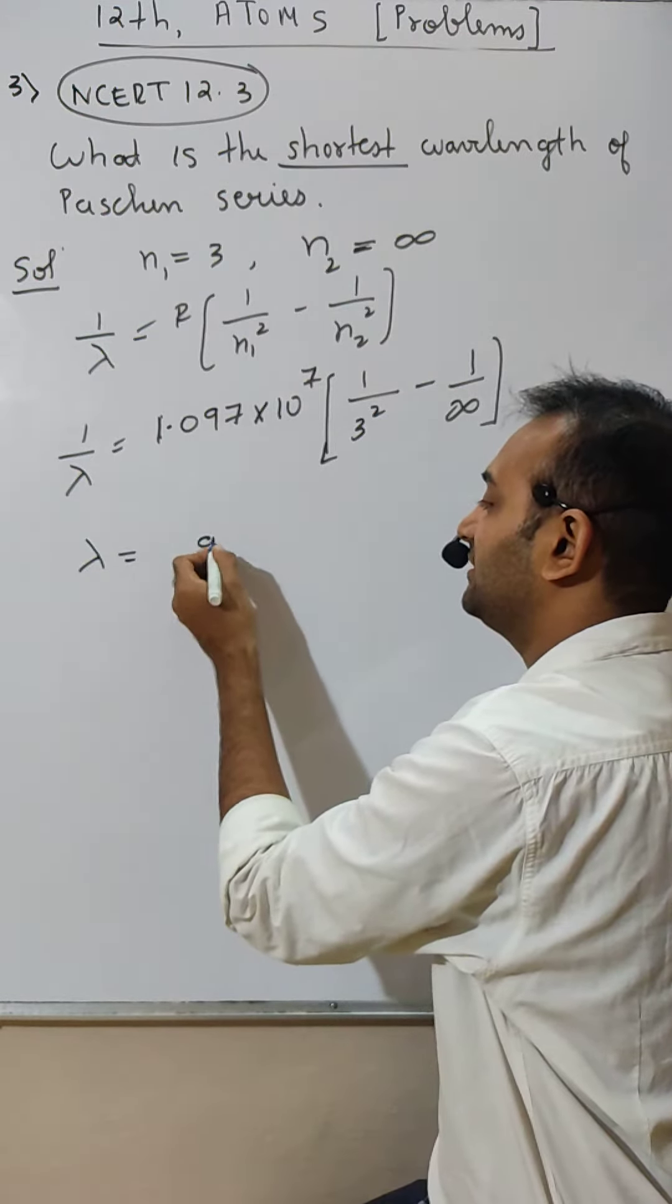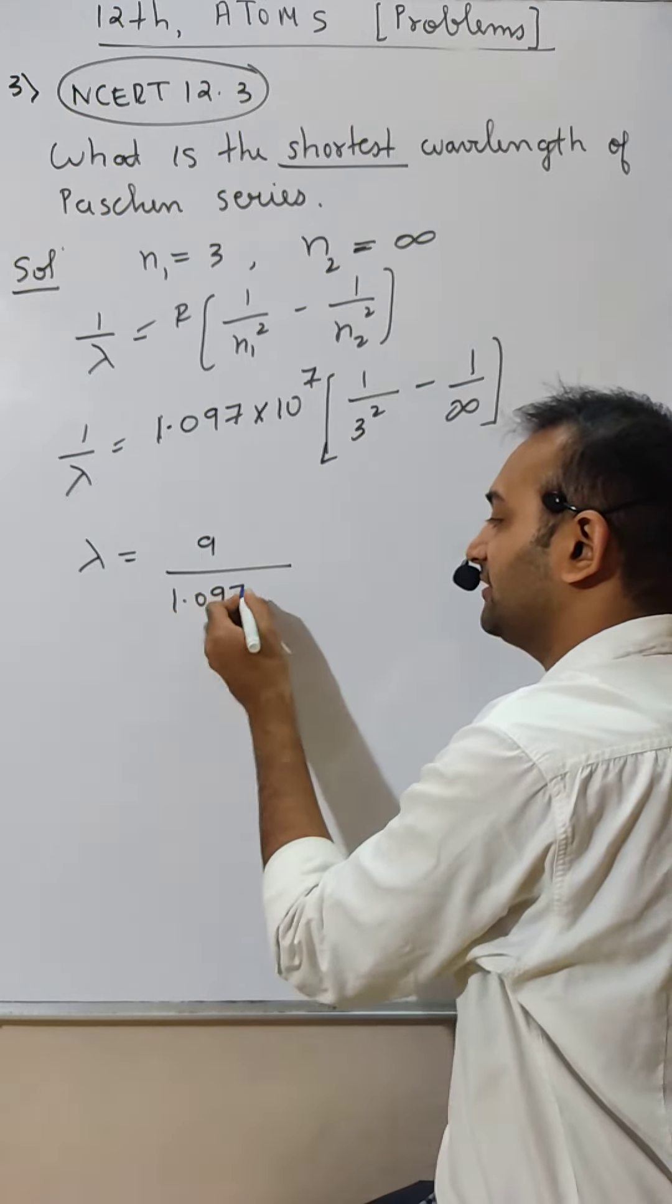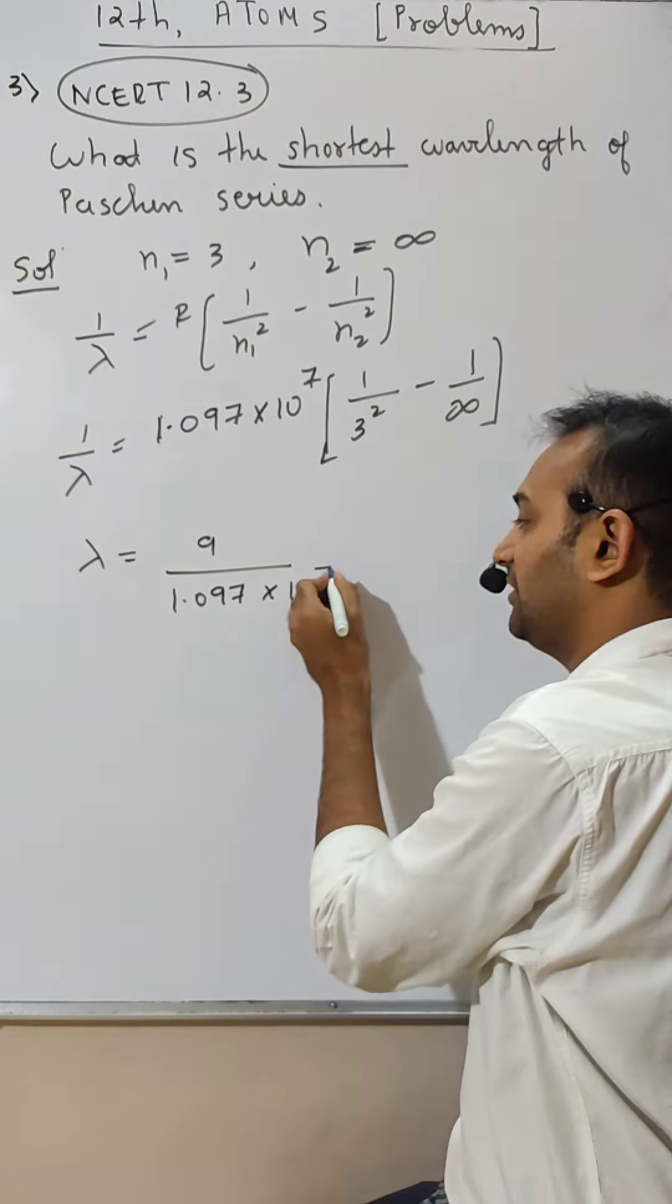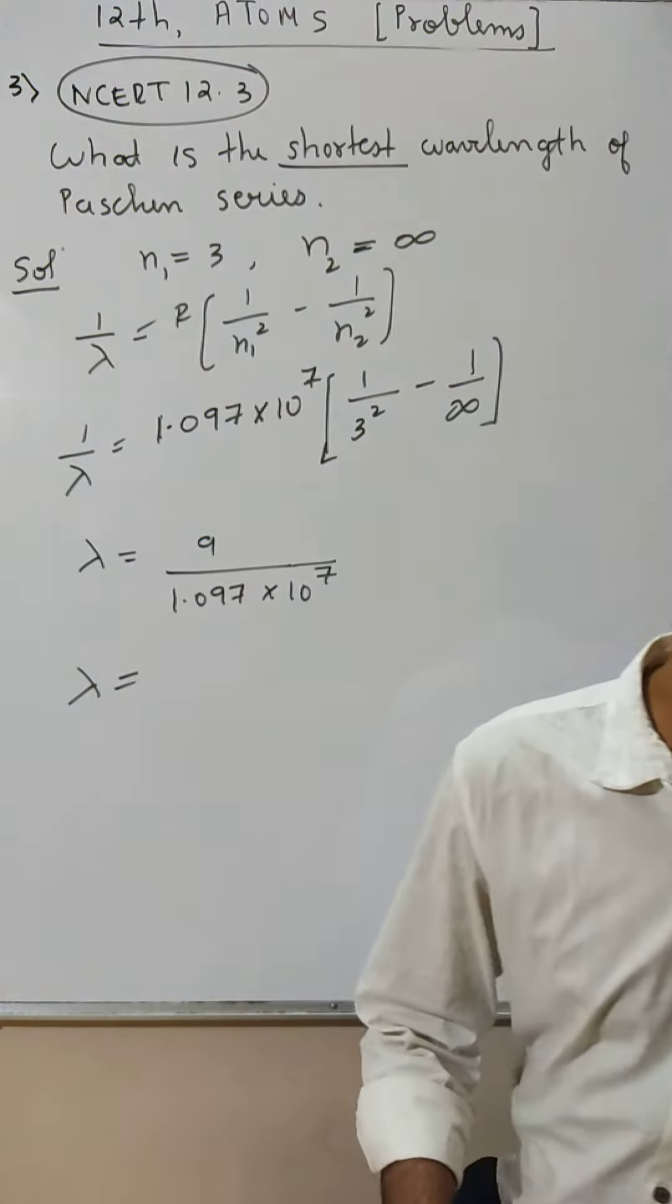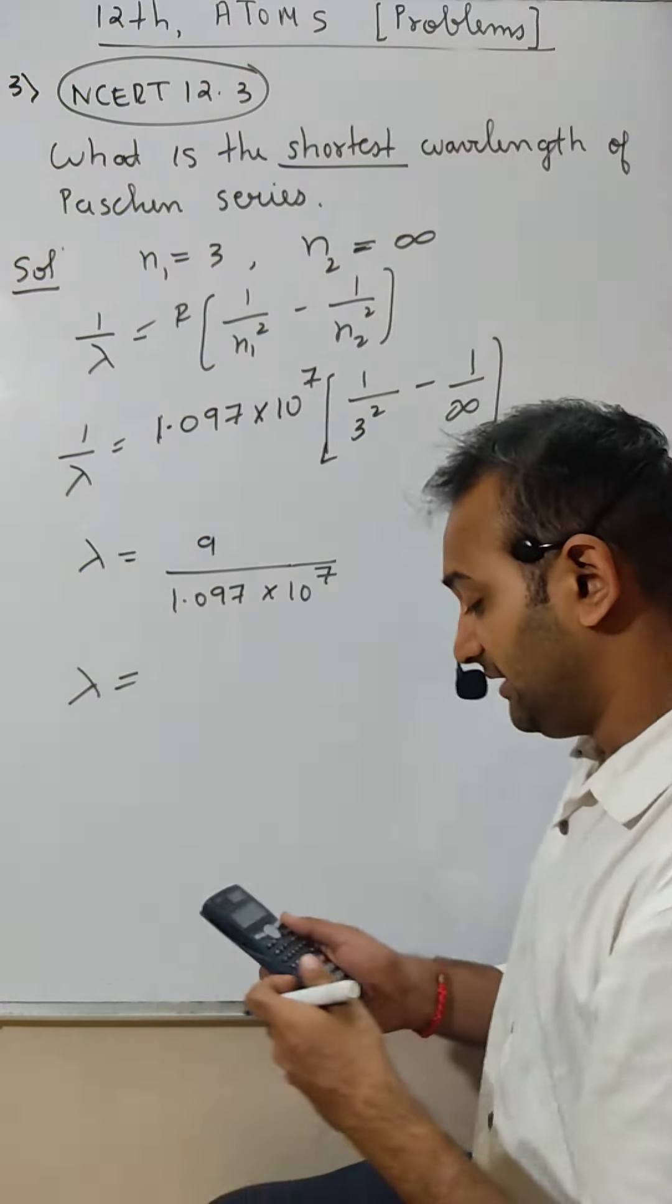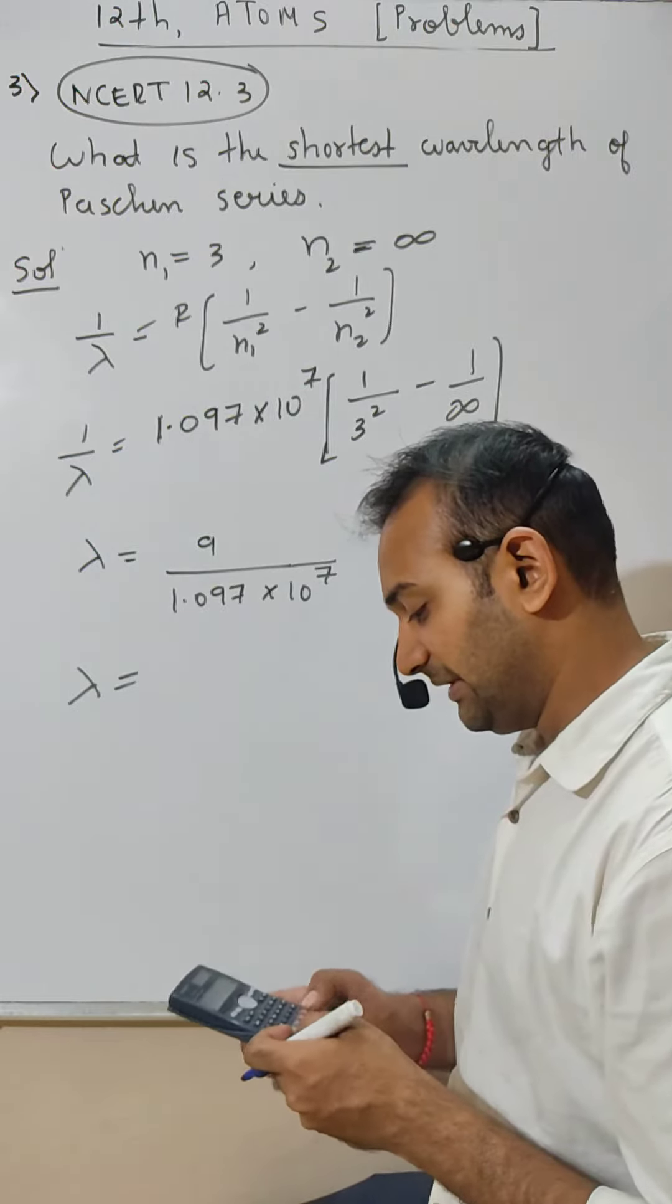Lambda is 3 square, 9, 1.097 into 10 raised to 7. So lambda becomes 9 divided by 1.097.